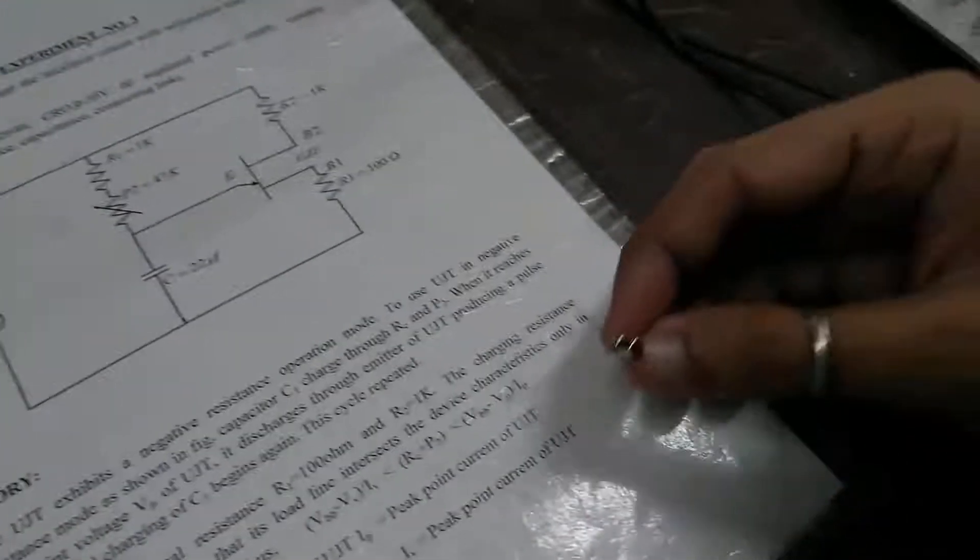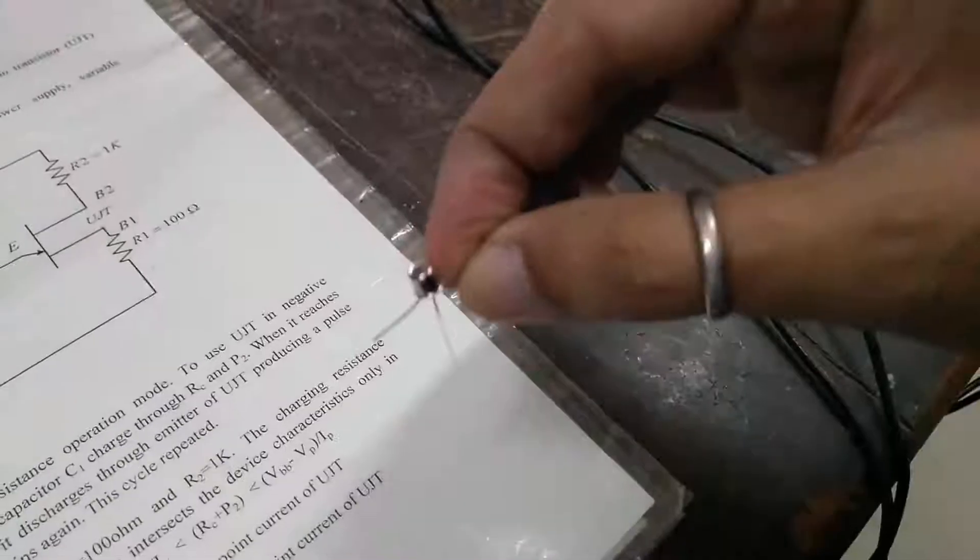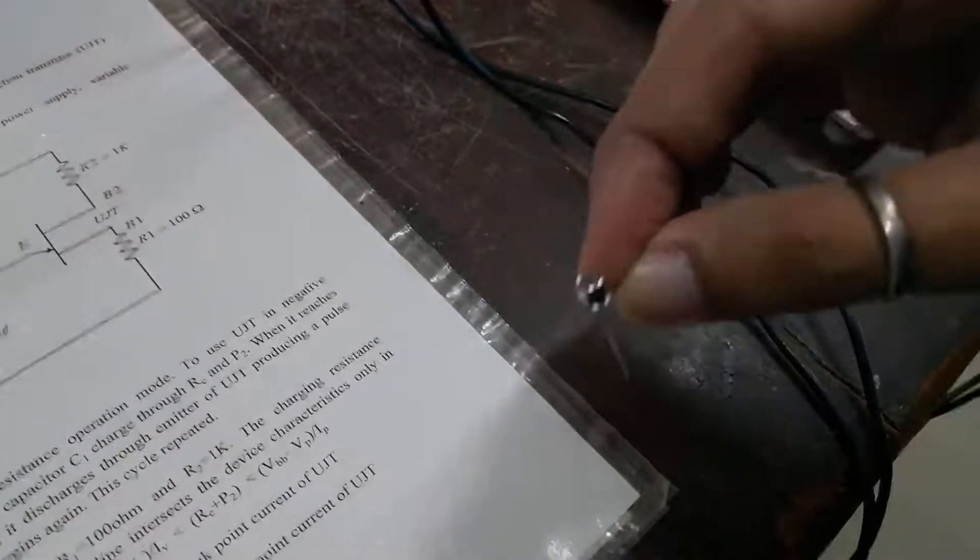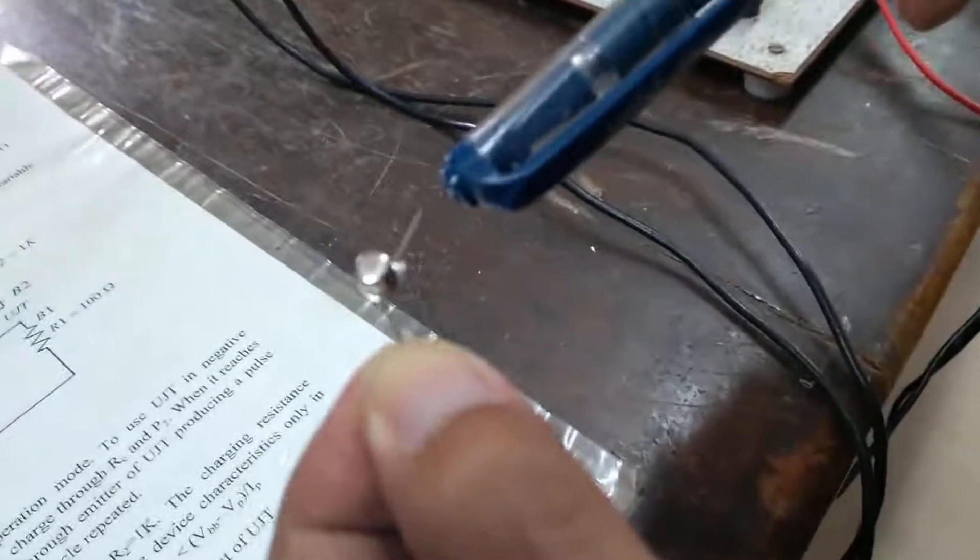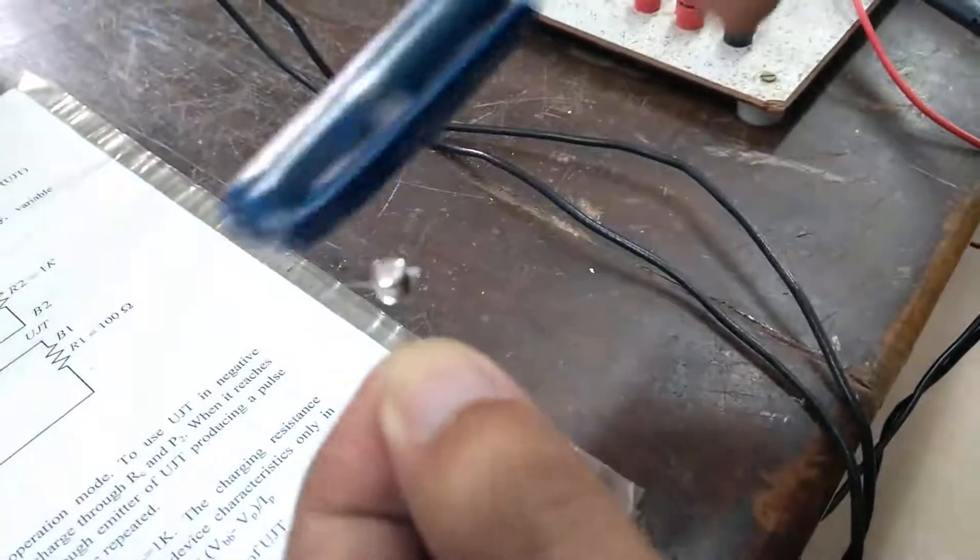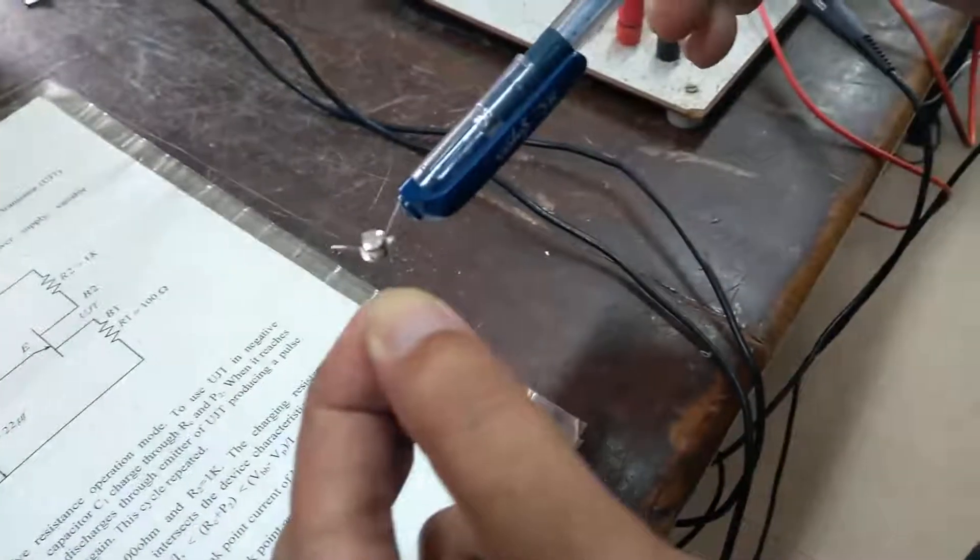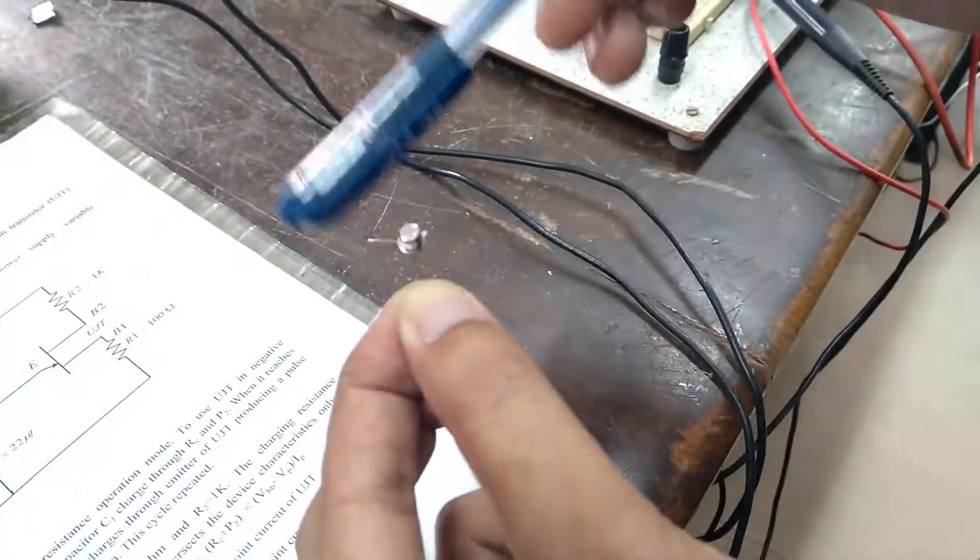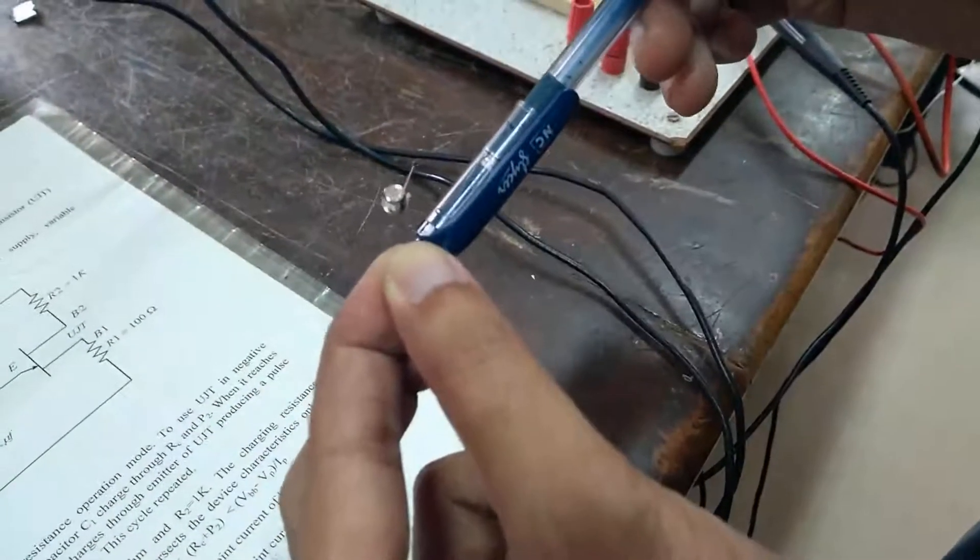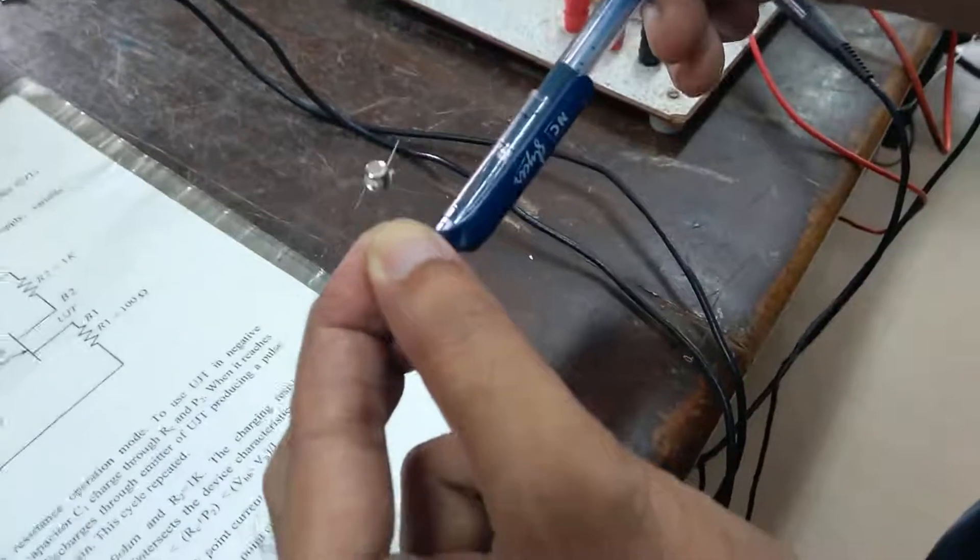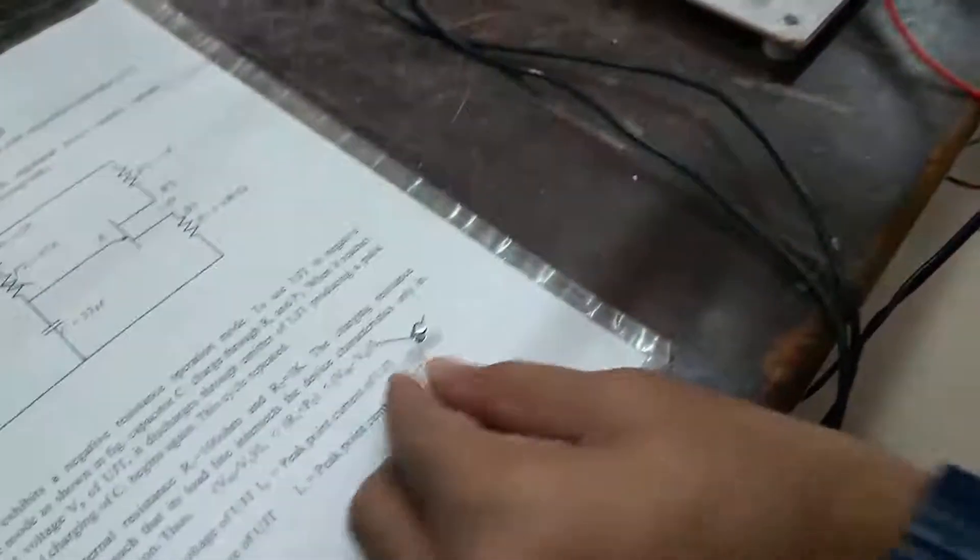For this practical, I am using this 2N2646 UJT. You can observe how to determine its terminals. We can determine by this, there is one notch given. From the notch in the anti-clockwise direction if we move, this terminal is emitter, this terminal is base 1, and this terminal which I am holding is base 2 terminal. And it is a 2N2646 with which we have actually applied this circuit.